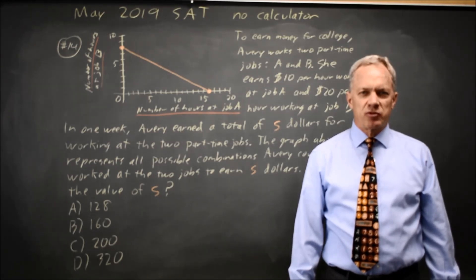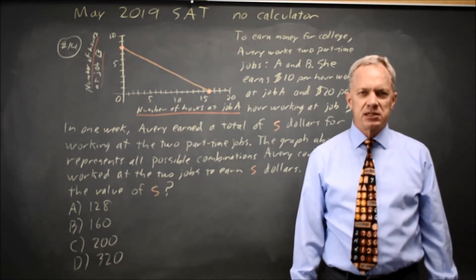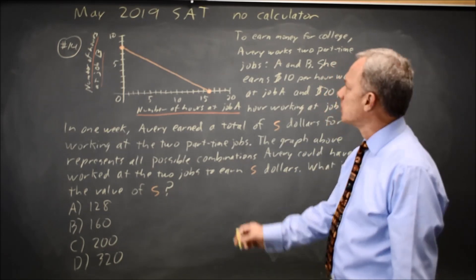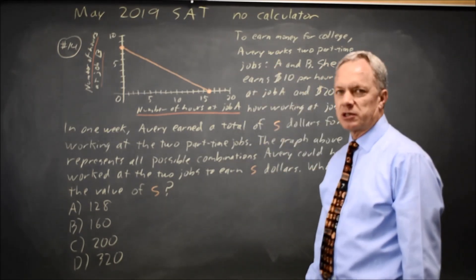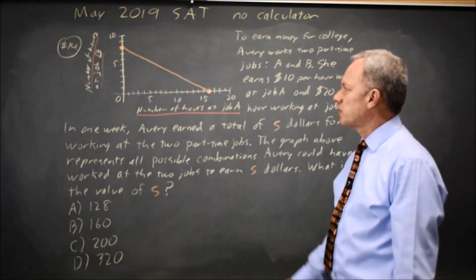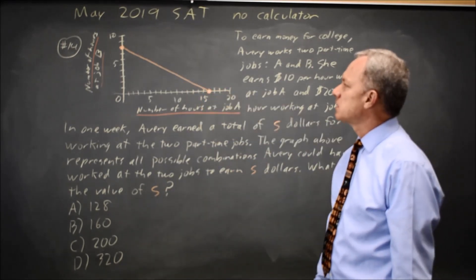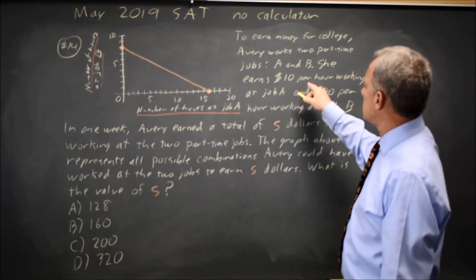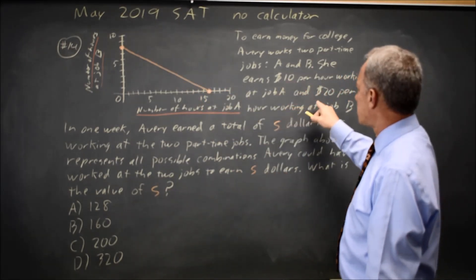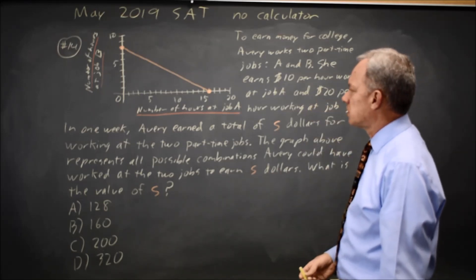This is non-calculator question number 14 from the May 2019 SAT. College Board gives us this word problem about earning money at two part-time jobs where the total amount for any point on this line is S. Job A pays $10 an hour and job B pays $20 an hour.